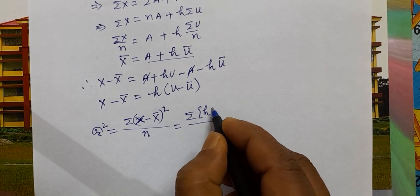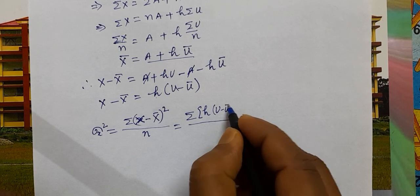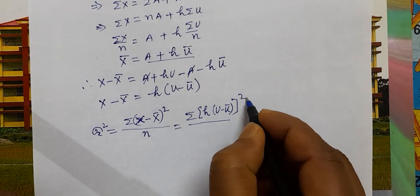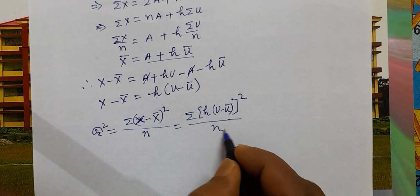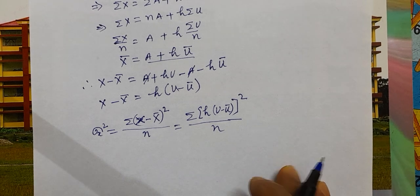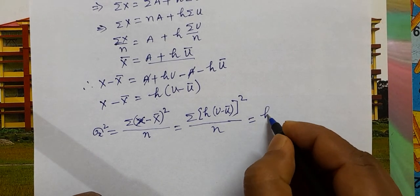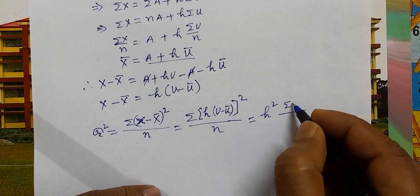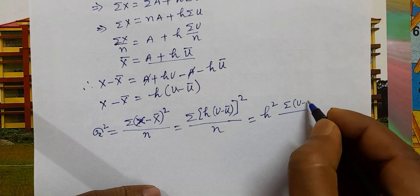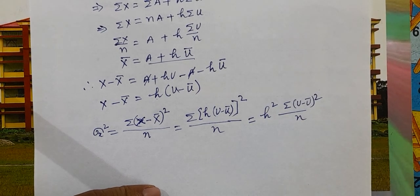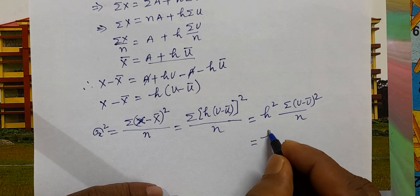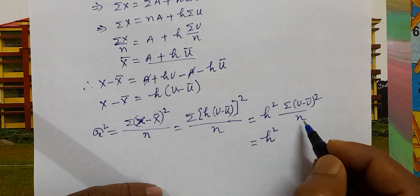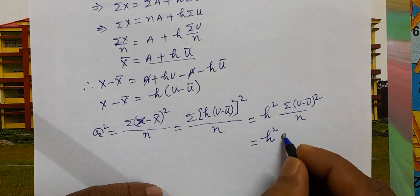Therefore, variance of x equals summation of (x minus x-bar) squared by n, which equals summation of h(u minus u-bar) squared by n, which equals h squared times summation of (u minus u-bar) squared by n. And that is h squared times the variance of u.